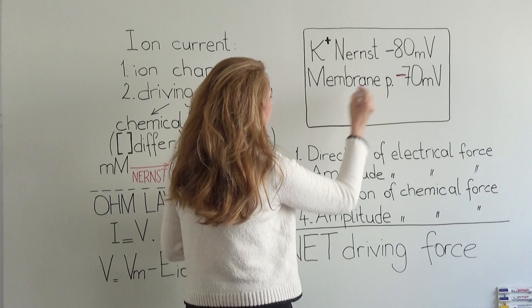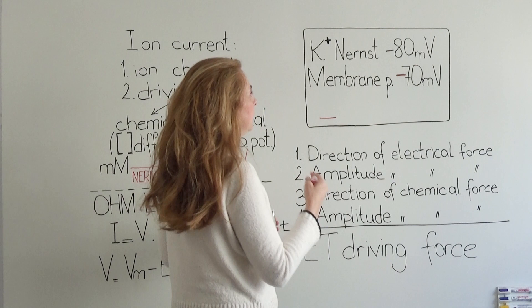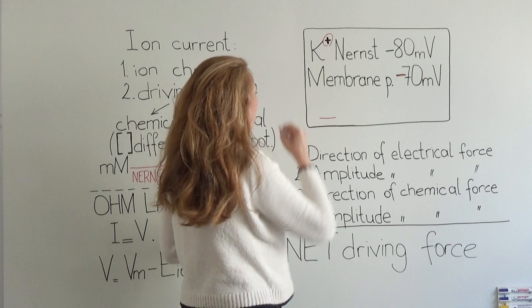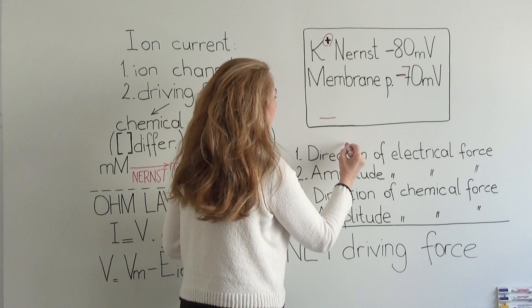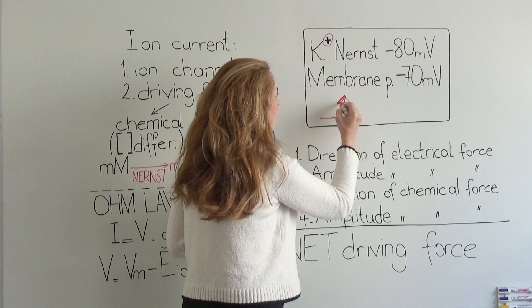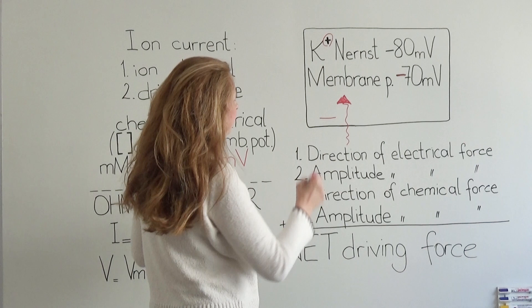We know that we always refer to the inner side of the membrane, so inside of the membrane is 70 millivolt more negative compared to the outside. Potassium has positive charge, so the negative charges inside the membrane are going to pull potassium inward. The direction of the electrical force is toward the inside of the membrane.